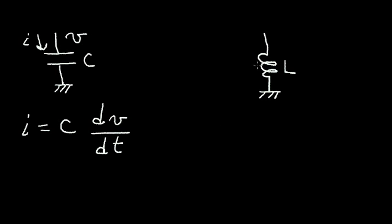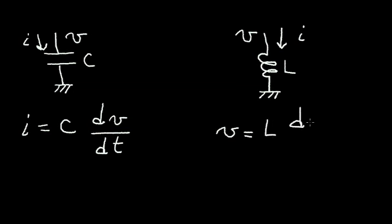If I take the inductor, I want to do a similar thing. I want to find an equation for the voltage across the inductor versus the current I through the inductor. The equation is V equals the inductance times dI/dT. Notice that the formulas between the capacitor and the inductor are similar. The quantity C is replaced with the quantity L for the inductor, and the voltage and current are reversed for the capacitor and for the inductor.